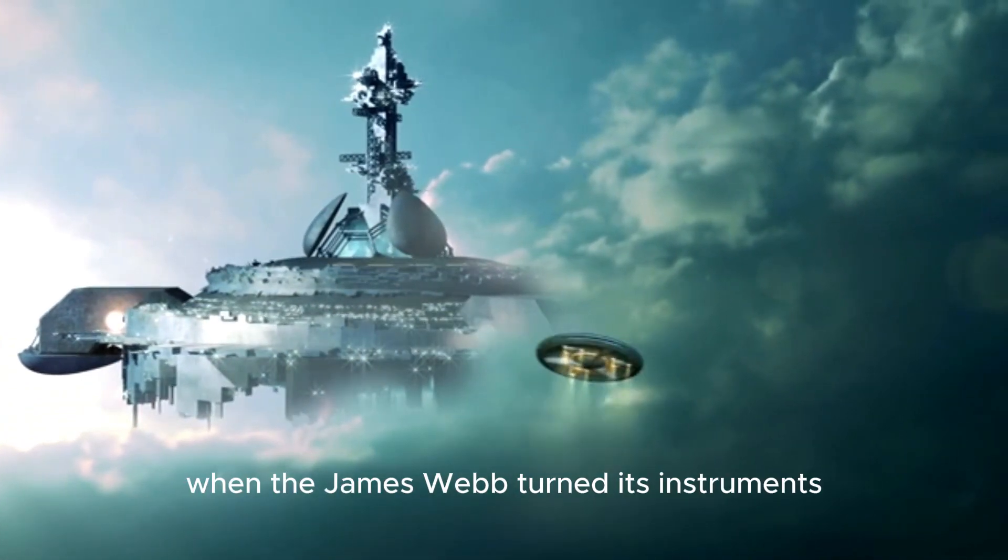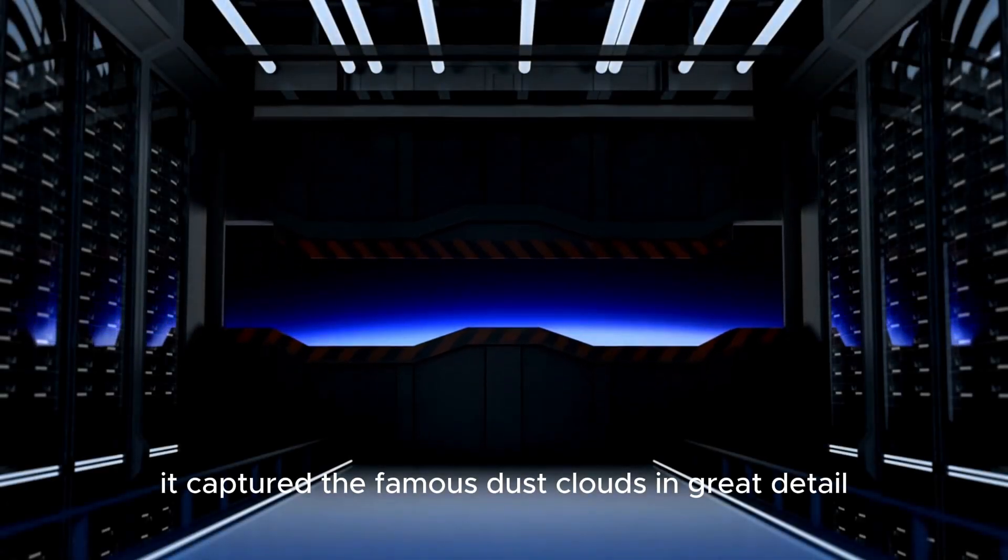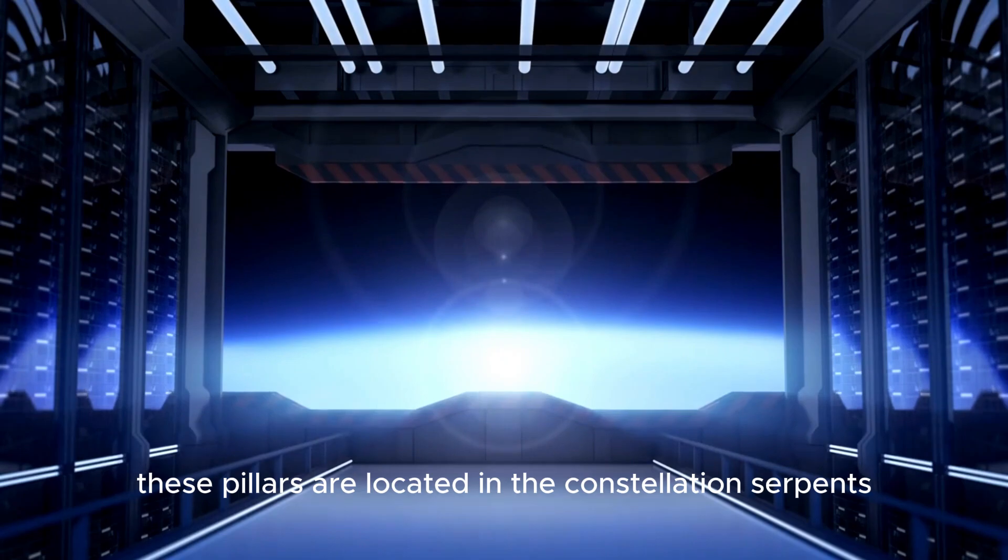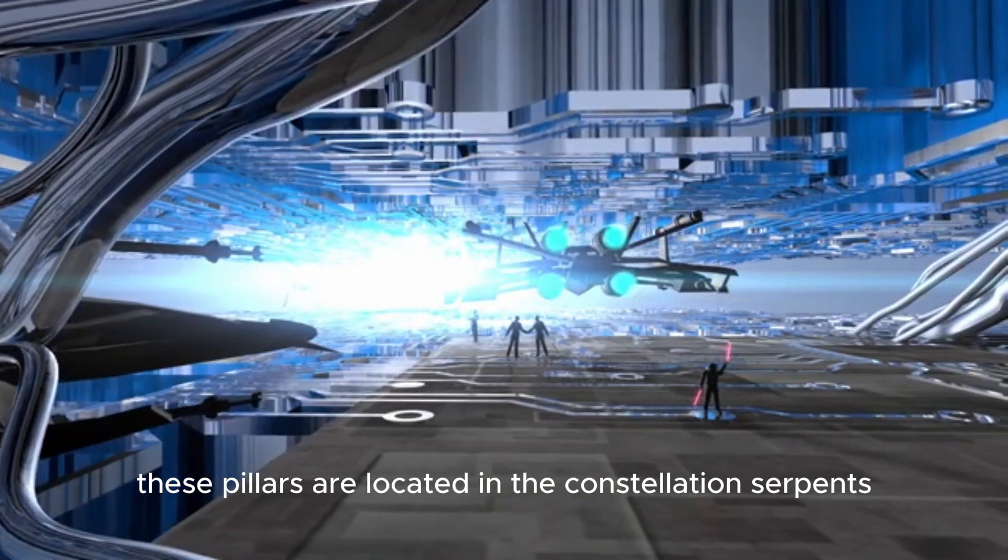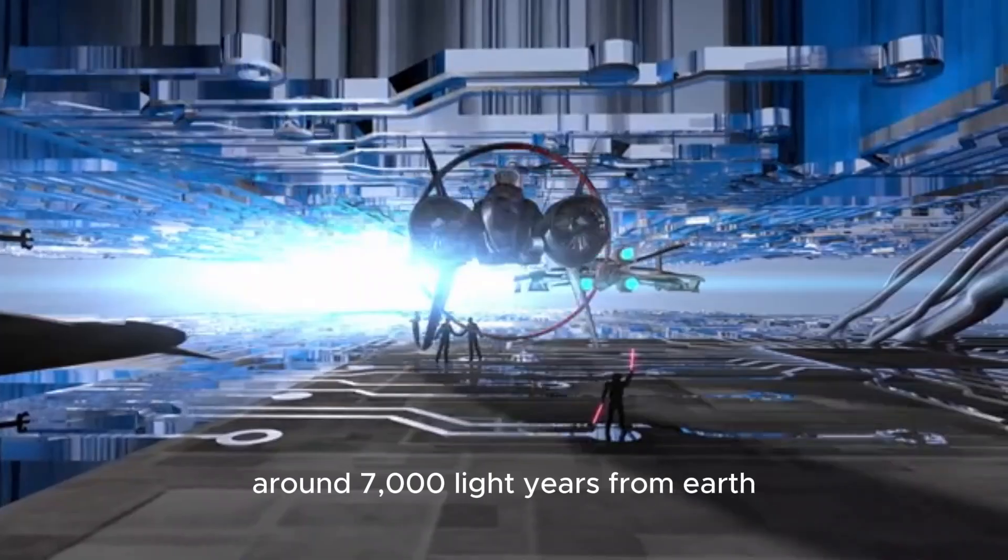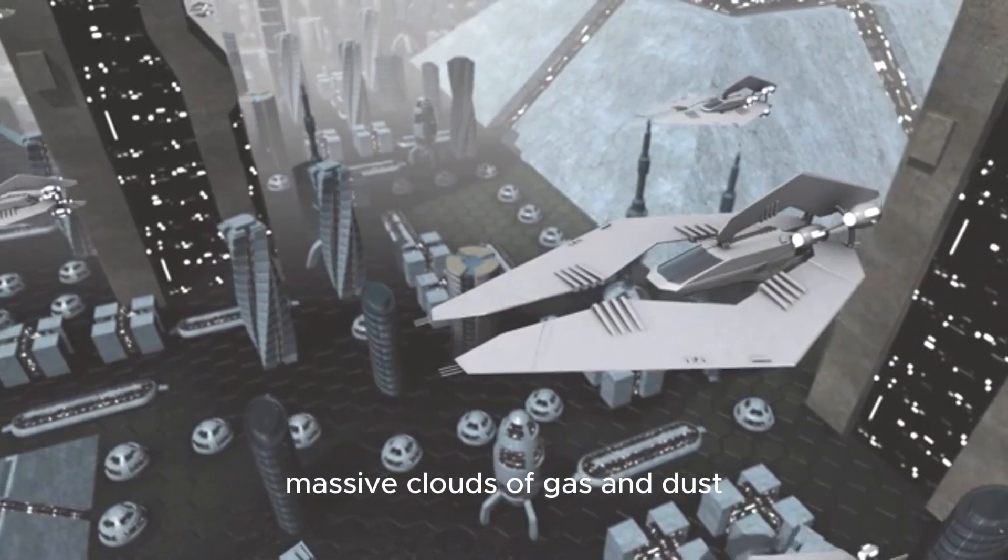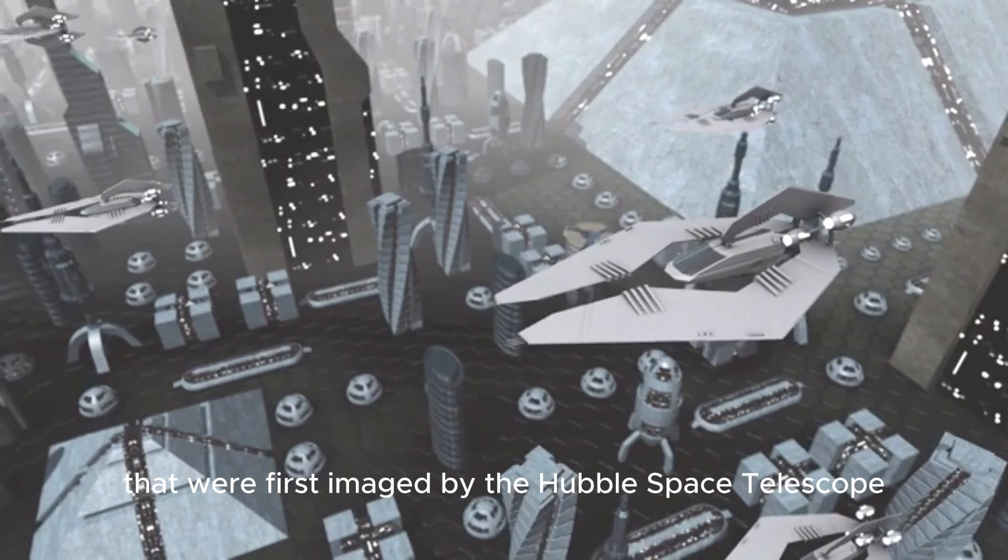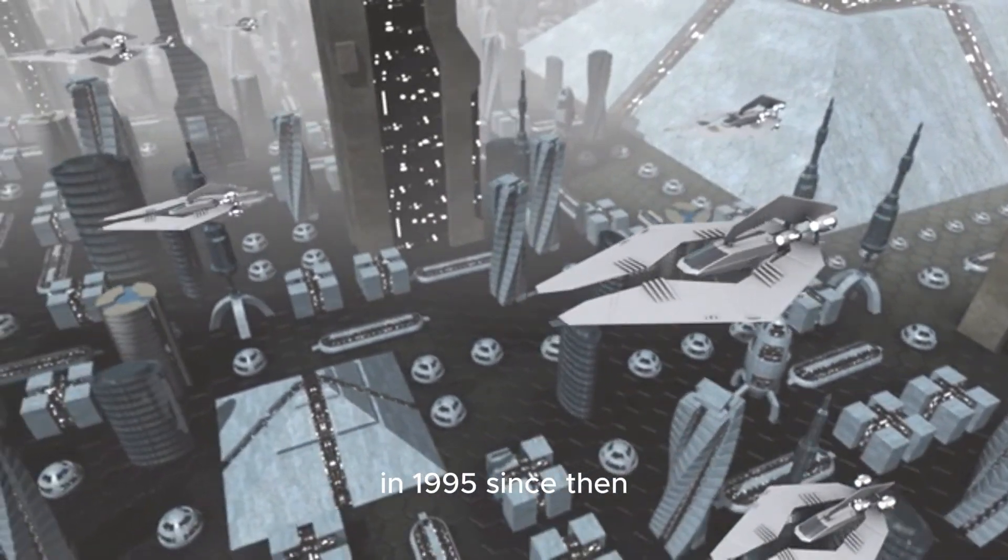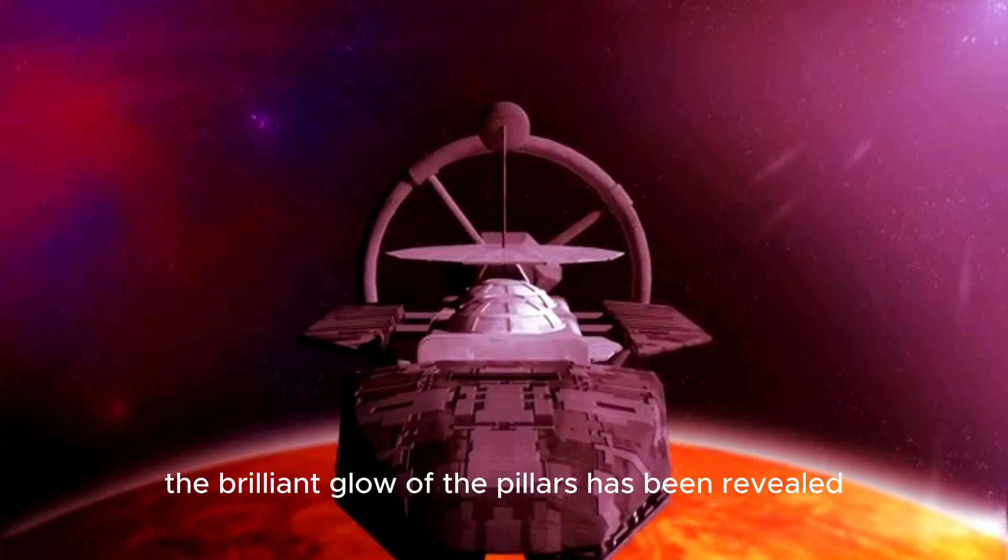When the James Webb turned its instruments toward the well-known pillars of creation, it captured the famous dust clouds in great detail. These pillars are located in the constellation Serpens, around 7,000 light-years from Earth. The pillars of creation are part of the Eagle Nebula, massive clouds of gas and dust that were first imaged by the Hubble Space Telescope in 1995.